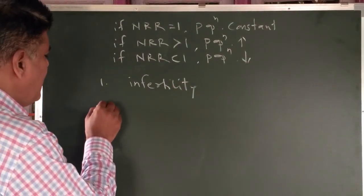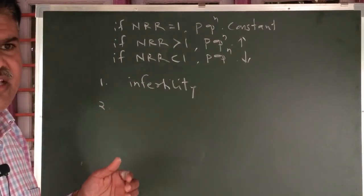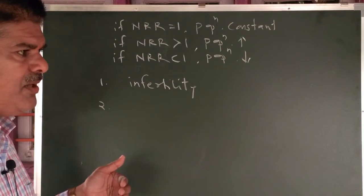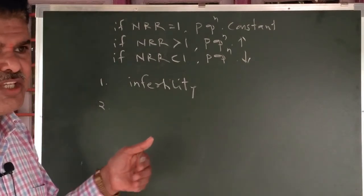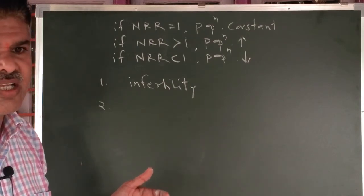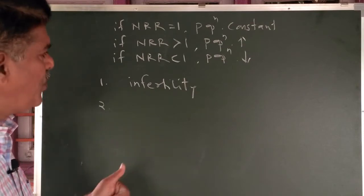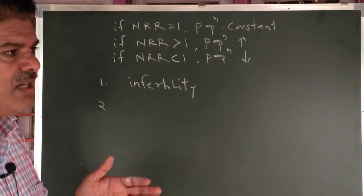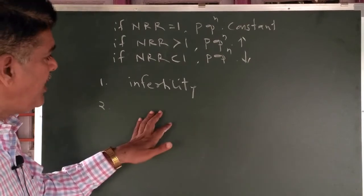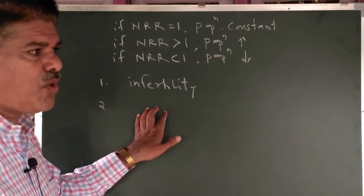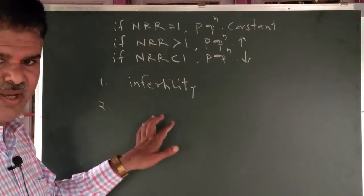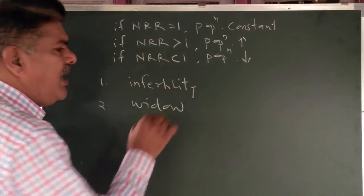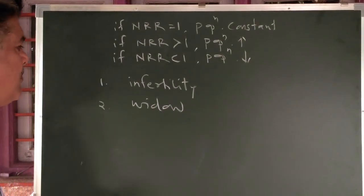Another limitation: suppose a girl child's husband dies before she attains her childbearing age group. Even though she has the capacity to give birth in her childbearing age group, due to the absence of her husband and social problems, she does not give birth to a child. So widowhood is again a problem in NRR.